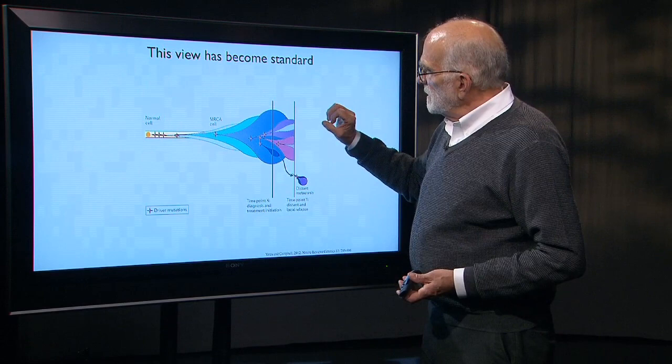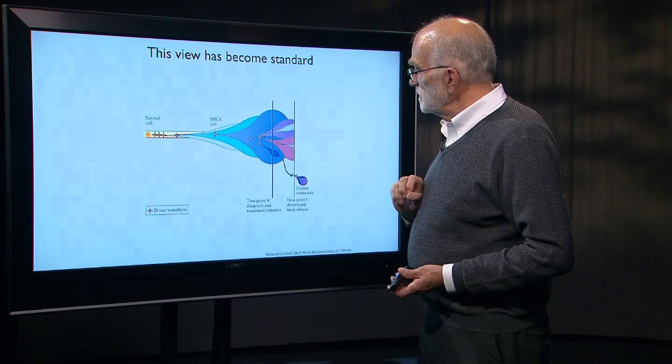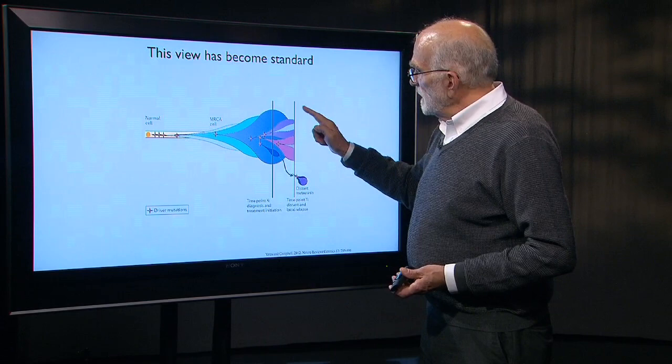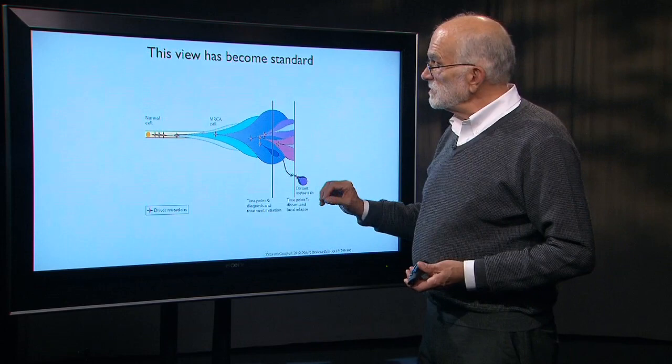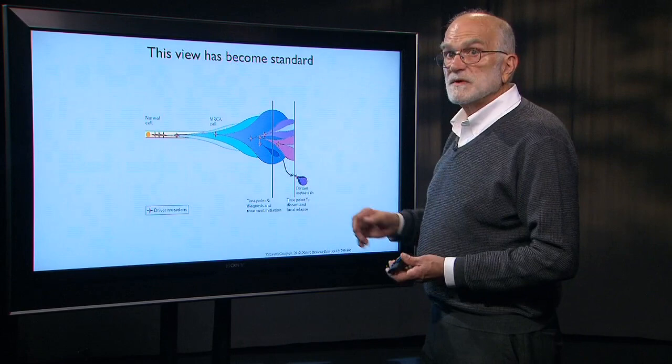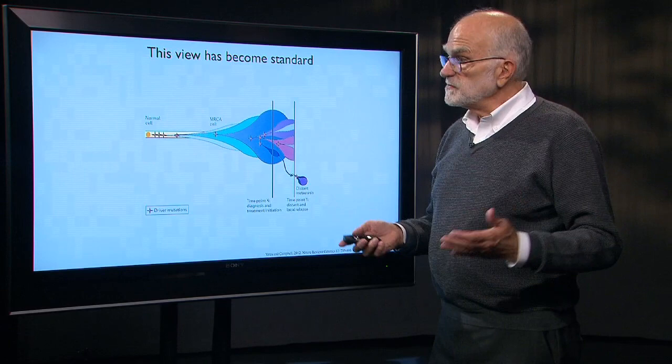There is chemotherapy. The chemotherapy selects for resistant clones, the resistant clones expand, and at some point the cells in the tumor acquire the ability to move and insert themselves into other tissue — there is metastasis, and in this case a resistant metastasis. This view of clonal evolution in cancer has become pretty much standard and accepted in oncology.